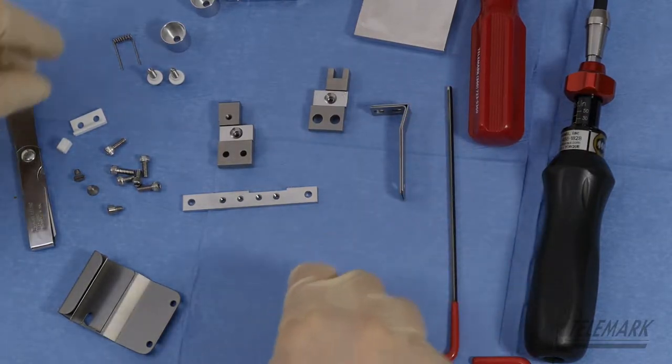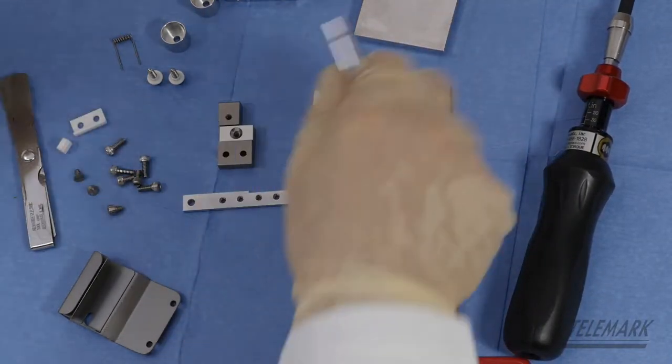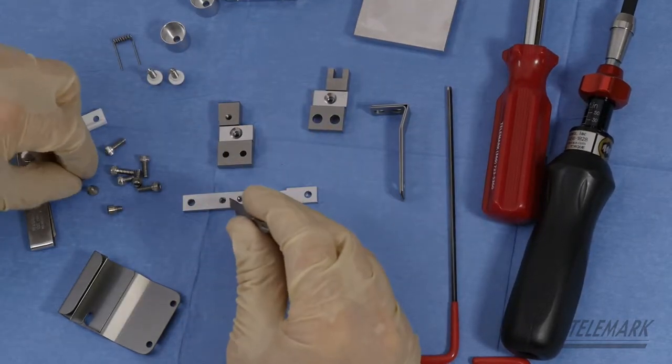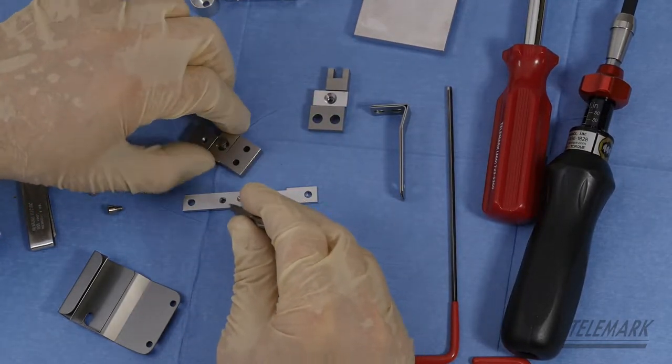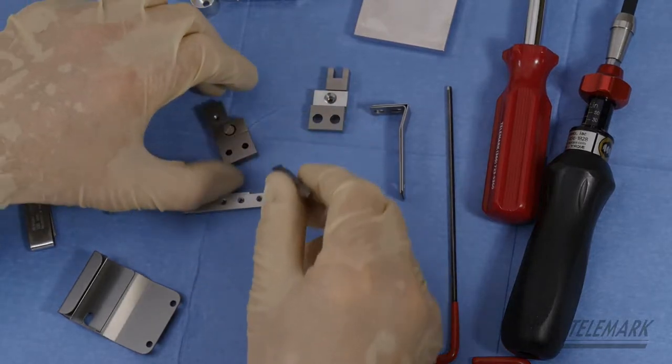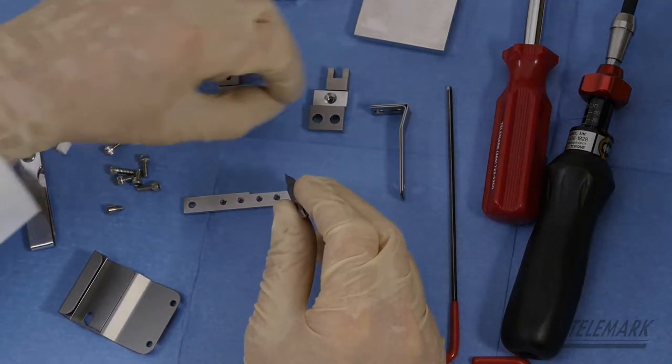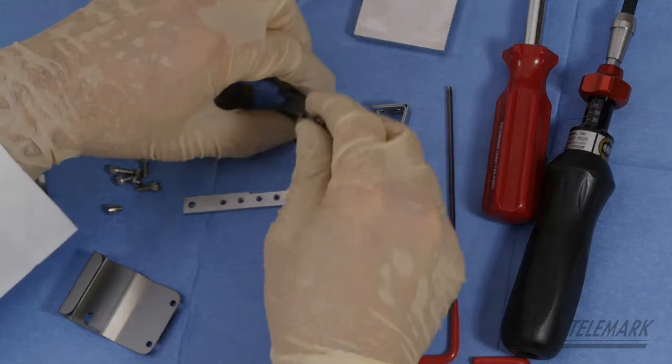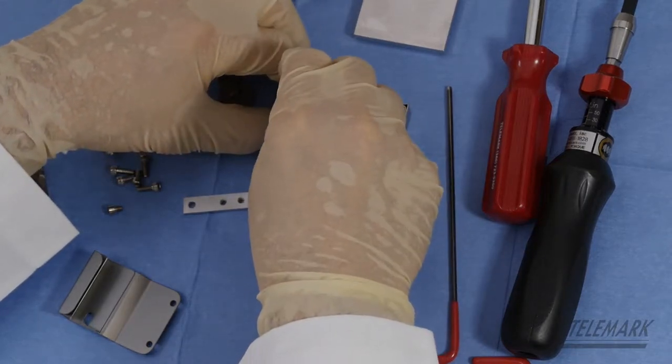Take the tip of the screwdriver and start the titanium screws that hold the filament clamps into the cathode blocks. You don't have to get them tight, just set yourself up for the build.